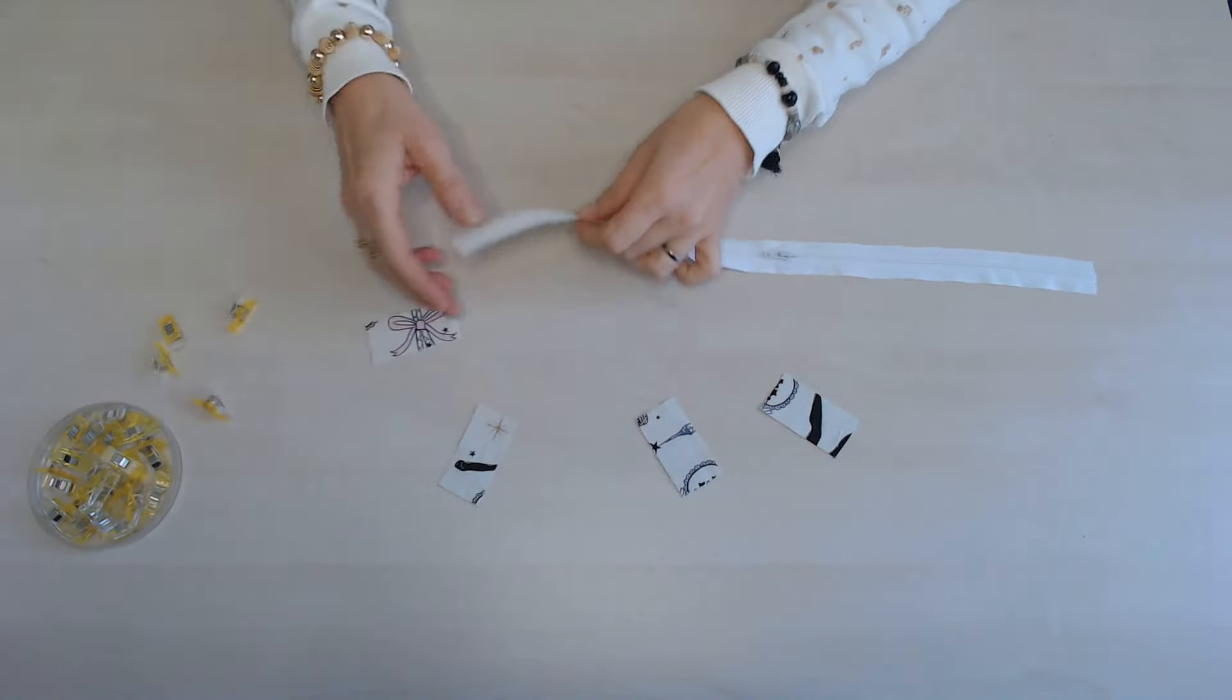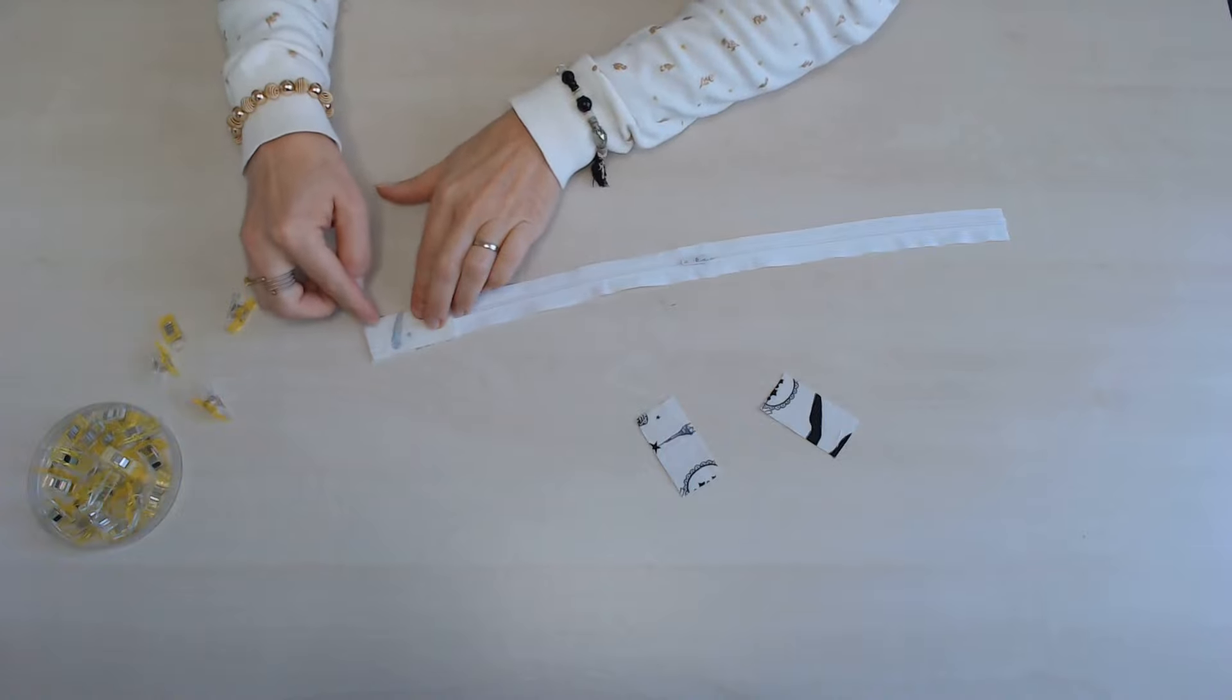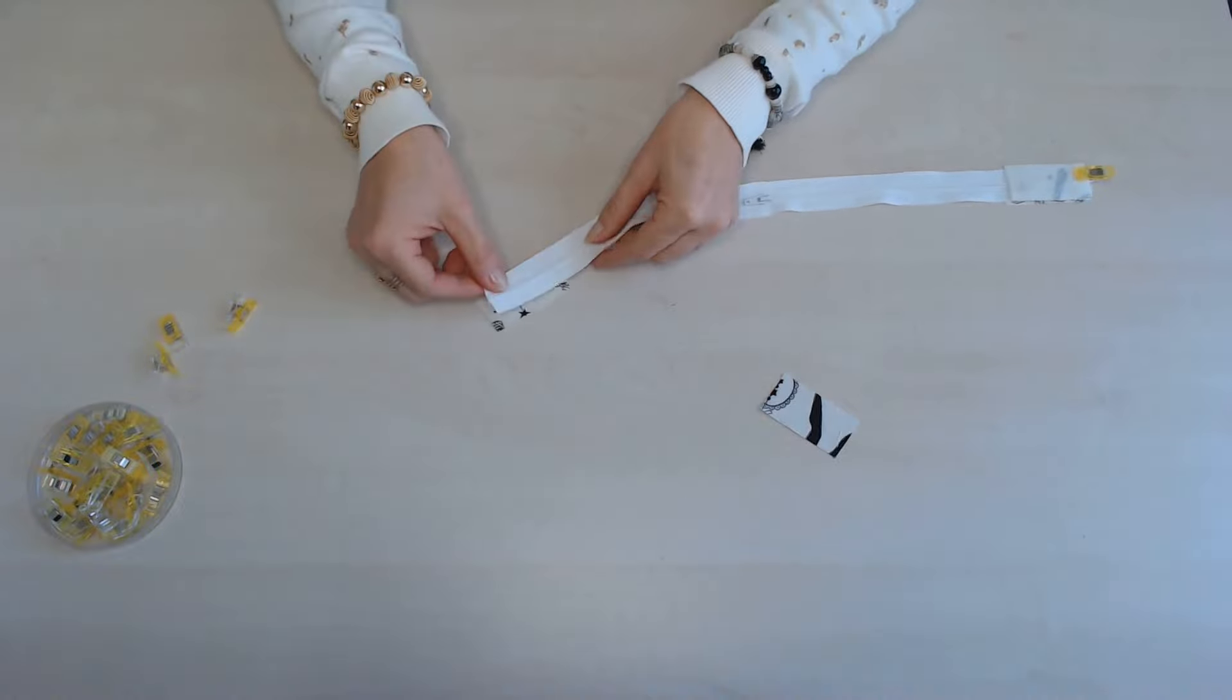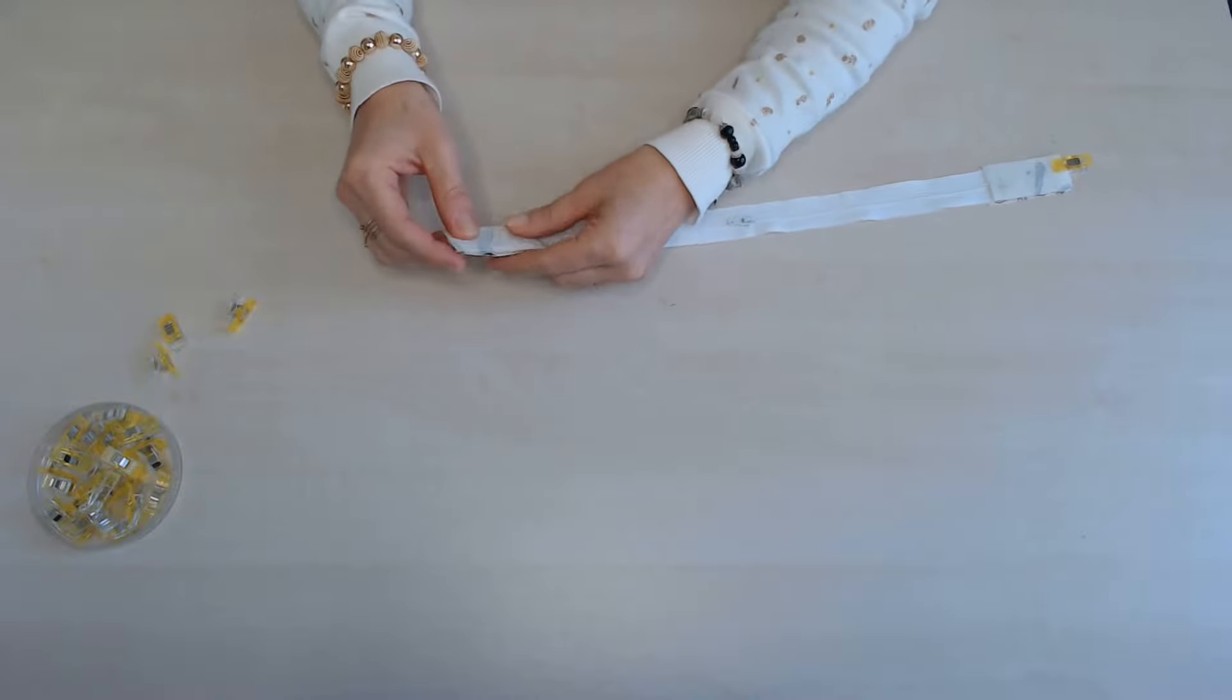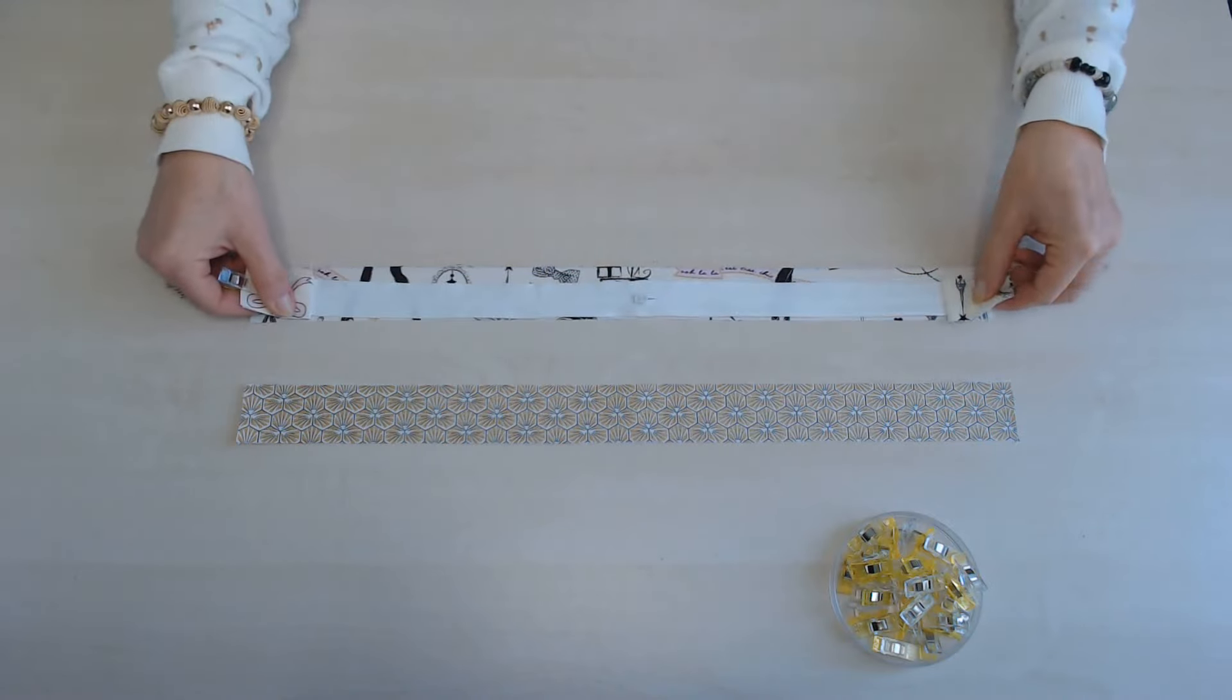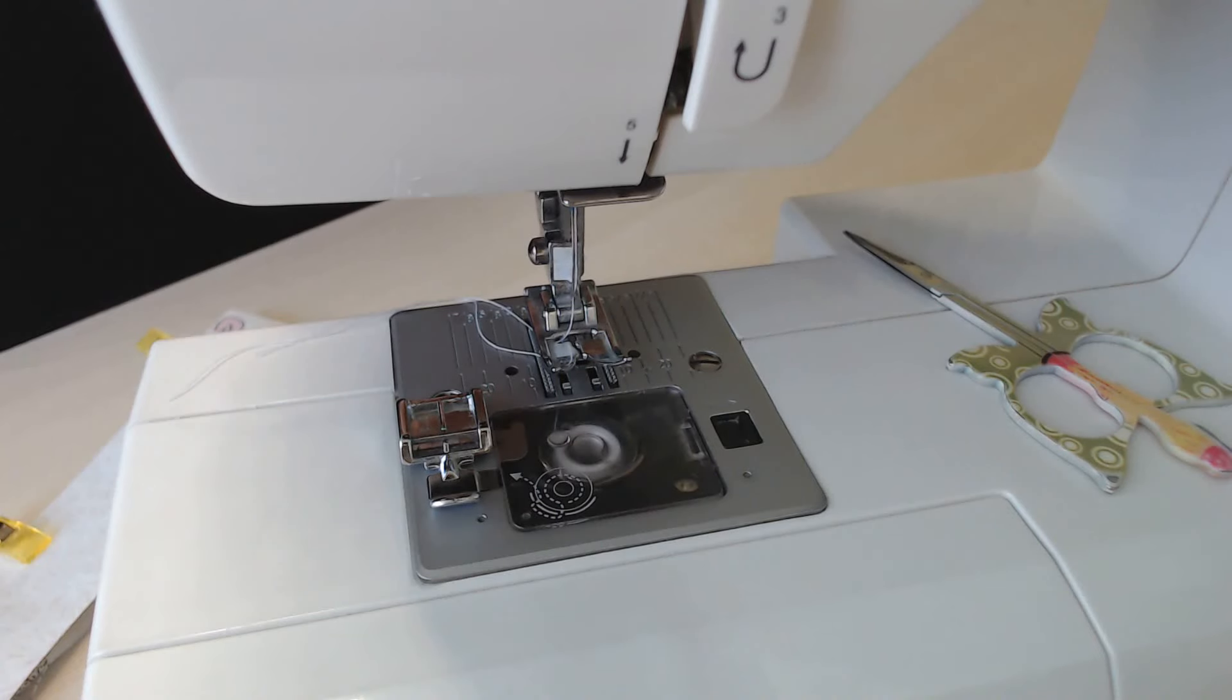On va préparer la fermeture à glissière en assemblant les petits morceaux de 3 cm sur 6 aux extrémités. Endroit contre endroit et on pique sur la largeur. On vient assembler la fermeture à glissière avec les deux morceaux de 52 cm sur 4, endroit de la fermeture contre endroit du tissu extérieur. Et on recouvre avec la doublure, il faut piquer sur toute la longueur et on change de pied presseur.